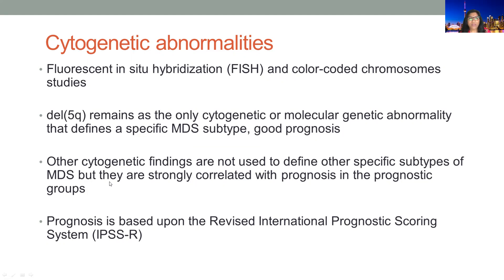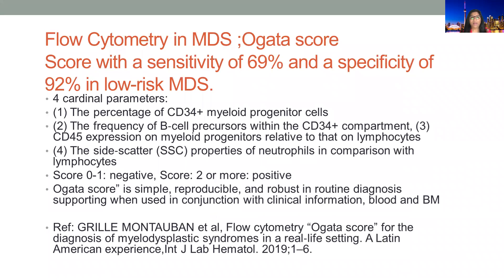For cytogenetic abnormalities, we can use FISH studies and color-coded chromosomal studies. Deletion 5q is the only abnormality specific to MDS and carries a good prognosis. Other findings are not specific to define MDS, but are strongly correlated with prognosis — especially using the revised International Prognostic Scoring System (IPSS-R). We need to know whether cytogenetics are normal or abnormal.